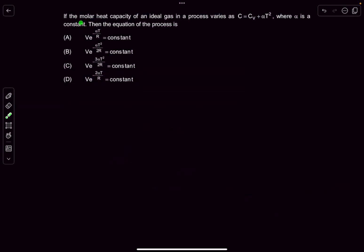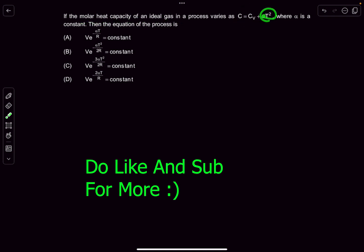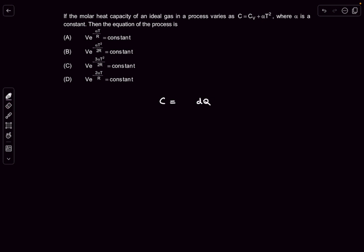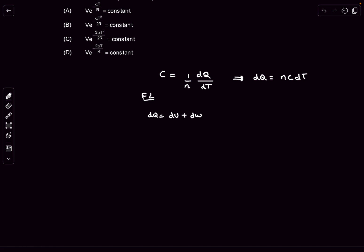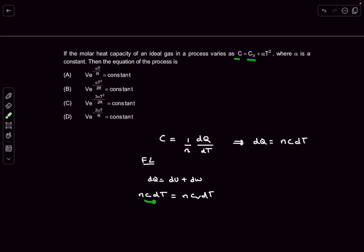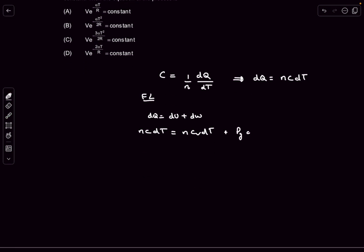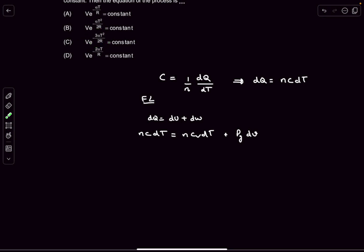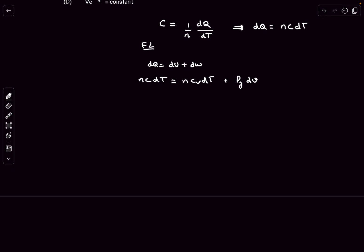Moving to the second question: the molar heat capacity of an ideal gas is given to vary with temperature, and we must find the equation of the process. The molar heat capacity C is the heat DQ needed per mole per unit temperature rise DT. Using the first law: DQ = DU + DW, we write NC·dT = NCv·dT + P·dV, so (C − Cv)dT = P·dV. Substituting P = NRT/V from the ideal gas equation, the N cancels.